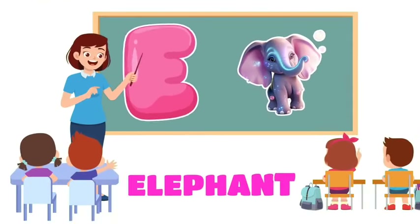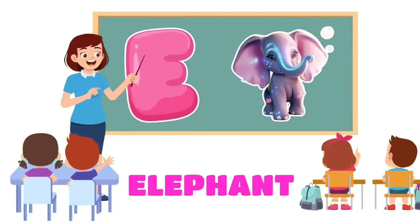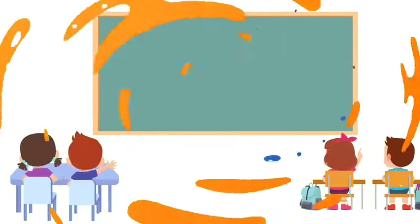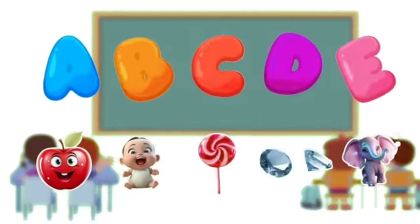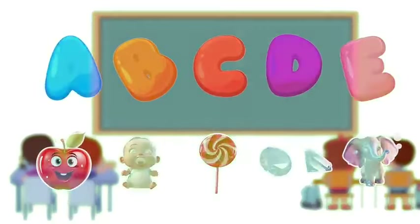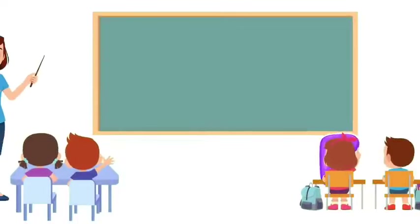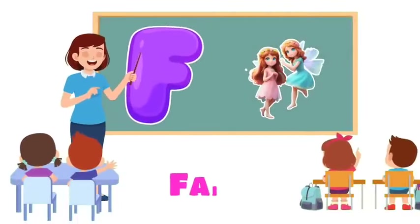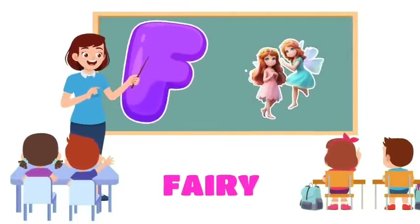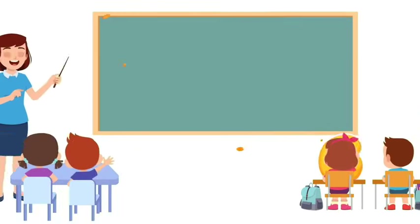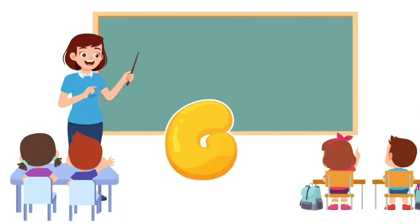E is for Elephant. E, e, elephant. E, e, elephant. E, elephant. F is for Fairy. F, fairy. F, fairy. F, fairy.